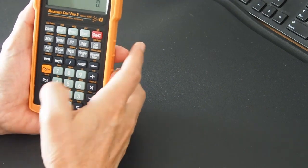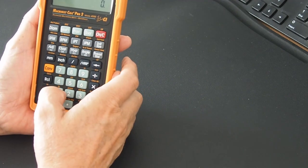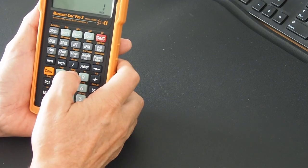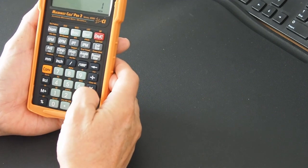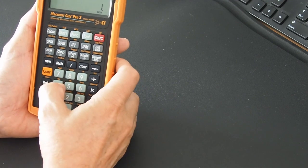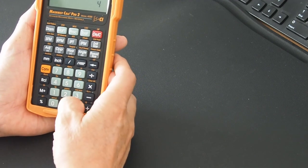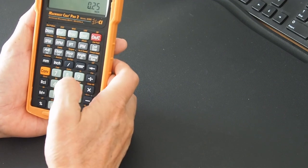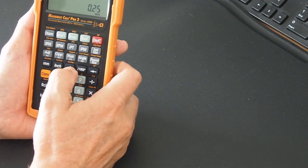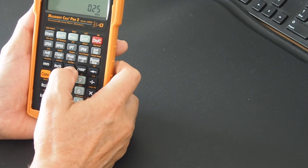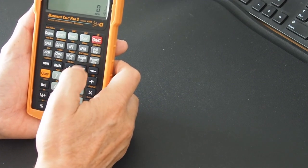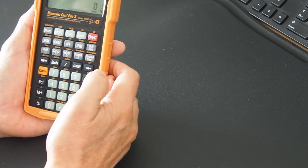So we're going for 1 inch divided by 4 equals. Now we know that's the answer, but if we press the forward slash button, it converts it into a quarter.